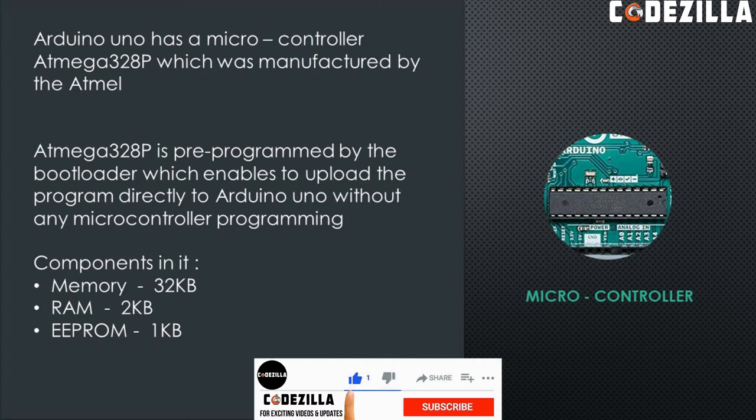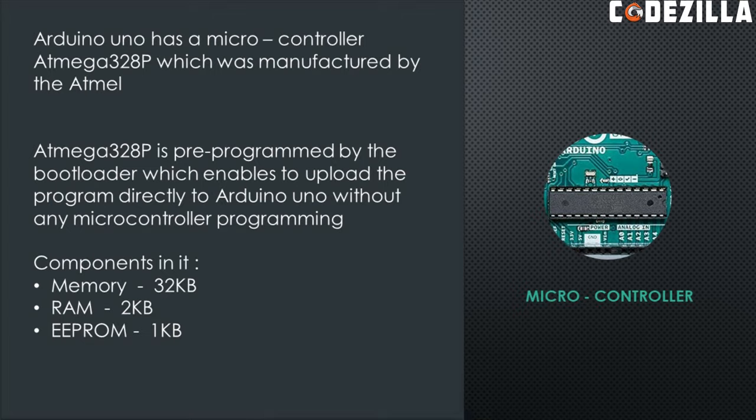The microcontroller of Arduino includes memory of 32 KB, RAM of 2 KB, and EEPROM of 1 KB. When code is uploaded to the Arduino board, it is stored in the 32 KB memory and runs with the help of the runtime memory RAM of 2 KB.